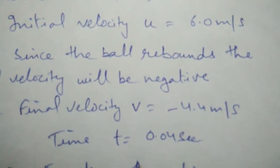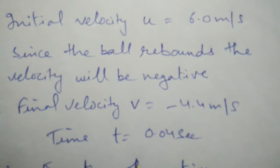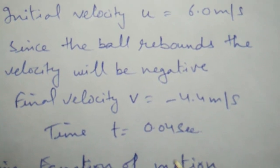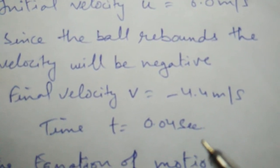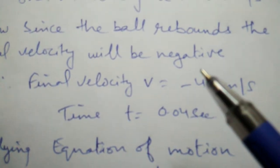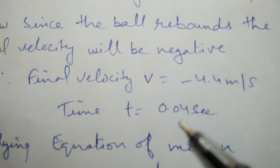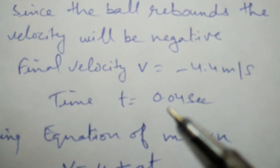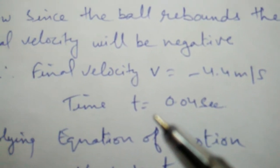And time for which the ball was in contact with the wall is 0.04 seconds. So here we have been given u, v, and t. And we have to find out the acceleration.